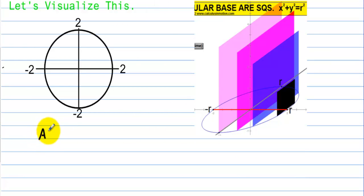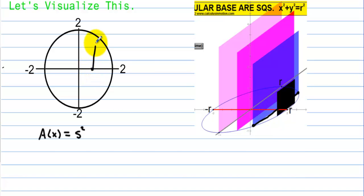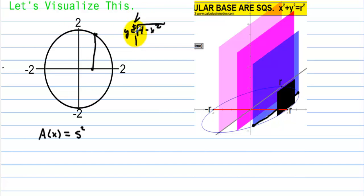We want to find the area A(x). The area of a square is side squared. From the circle, this half to the other half is the length of the side. But from the x-axis to the edge of the circle is the function value. If we solve for y, we have y equals the square root of 4 minus x squared — plus or minus. The top half is the plus and the bottom half is the minus. If we go from the x-axis to the circle, that's the length of half of the side.